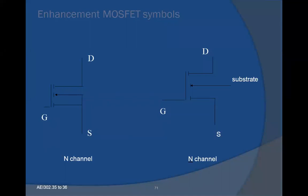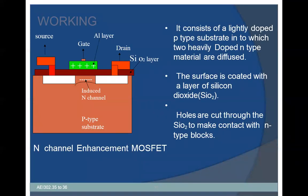This represents the N-channel enhancement mode MOSFET symbol. The working of N-channel enhancement MOSFET: it consists of a lightly doped P-type substrate into which two heavily doped N-type regions are diffused. The surface is coated with a layer of silicon dioxide. Holes are cut through the silicon dioxide to make contact with the N-type blocks. In depletion mode there is a continuous channel, but in enhancement mode the channel is partitioned between each part.